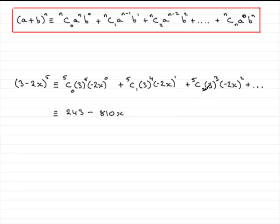For 5C2, you should find that you get 10. And then with all of this here, you're going to get a plus. And it turns out to be 1,080x squared. And don't forget to put plus and so on.